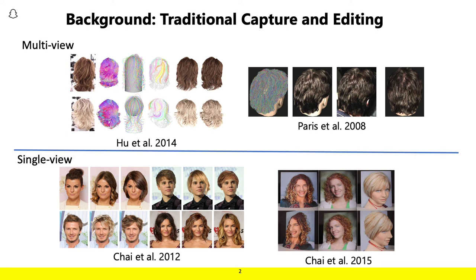Hair capture and editing is a problem that was initially addressed using multi-view capture, which, while sufficient to acquire models for films and games, required cumbersome setups that couldn't really extend to images in the wild. Other recent approaches used various optimization techniques to acquire hair structure and appearance that could then be edited or manipulated in real images, though still somewhat limited in the overall complexity and flexibility of the edits they could support.